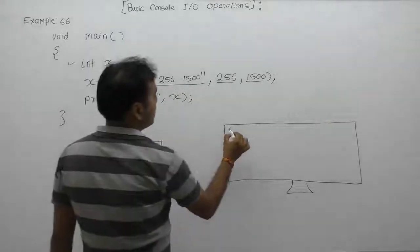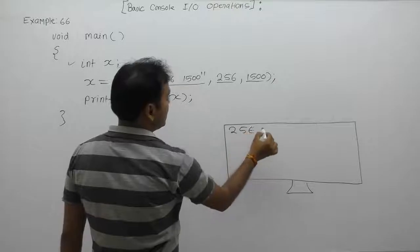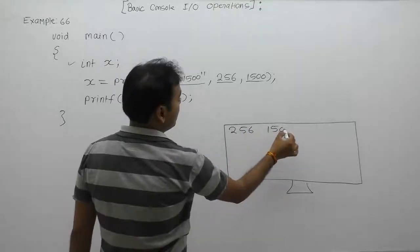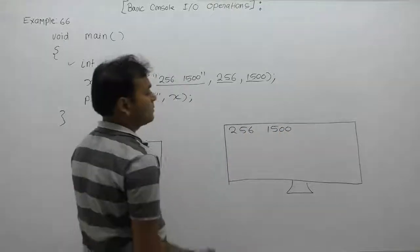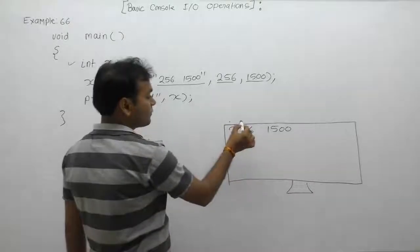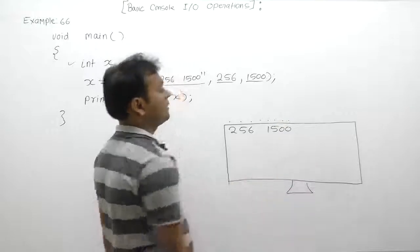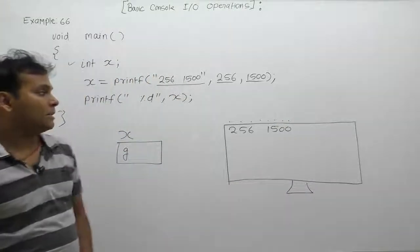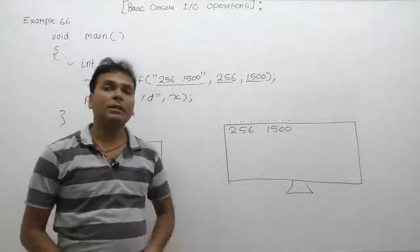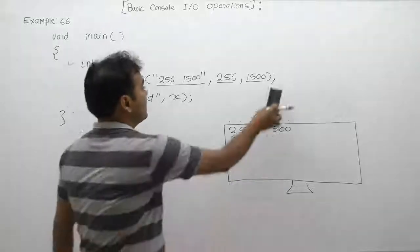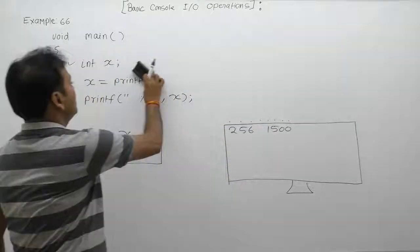How many total symbols are displayed? One, two, three, four, five, six, seven, eight. Total number of displayed symbols is eight. Therefore it will return the integer number 8 as the return value of this printf call.